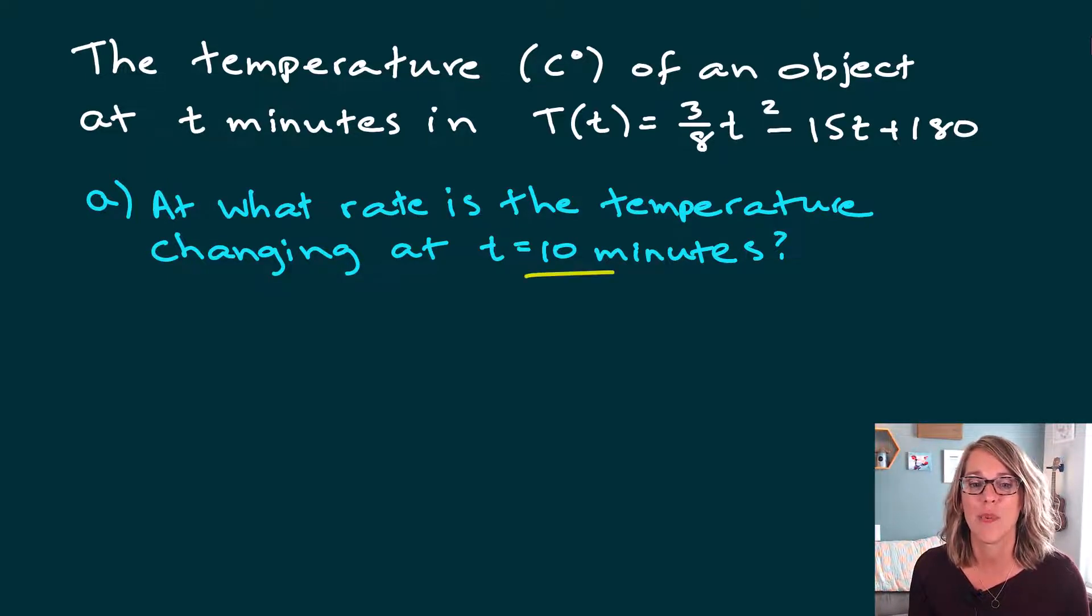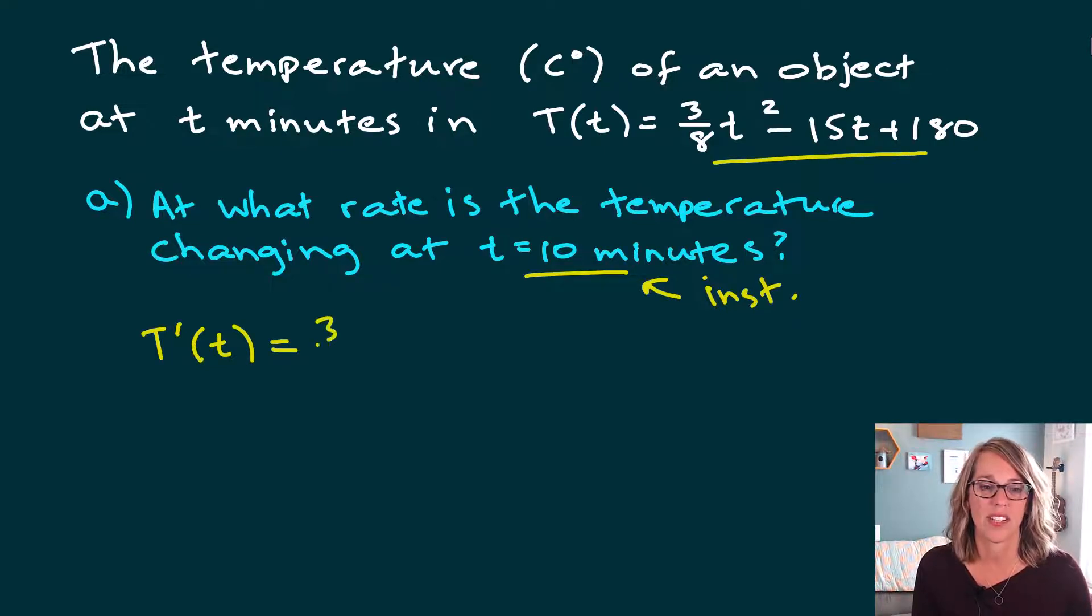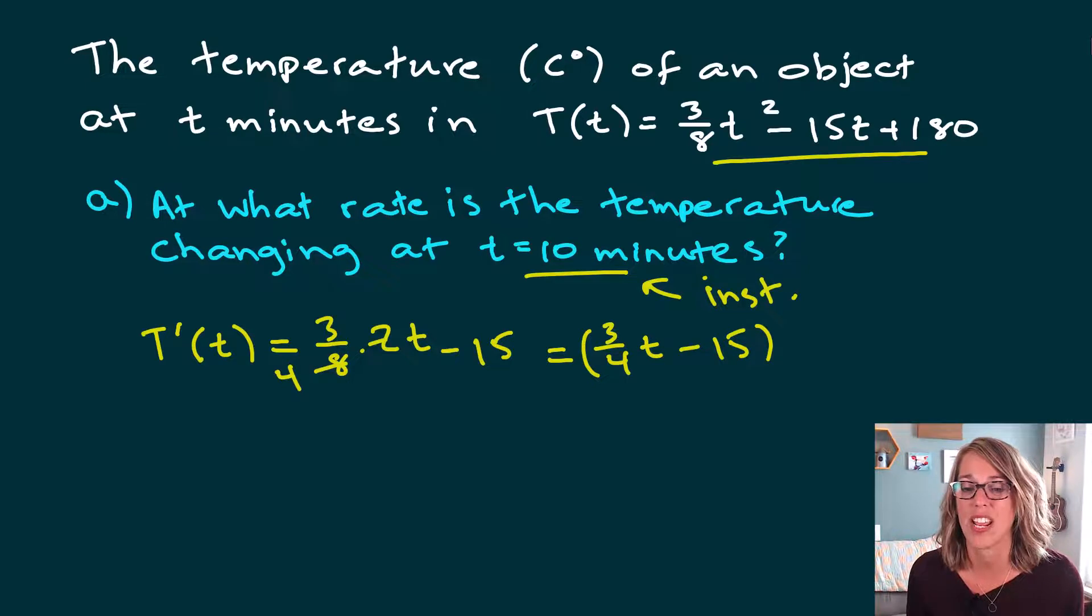Now we're just given a single moment in time. That means that we are looking for an instantaneous change. So the instantaneous change is going to be the derivative. I'm going to start by finding the derivative of capital T, and that's going to be the derivative of my function here. So I'm going to bring the two out in front. So that's going to be three eighths times two, and I've got t to the first now minus 15. 180's derivative is zero. So this is two cancels with the eight. We get three fourths. So three fourths times 10 minus 15.